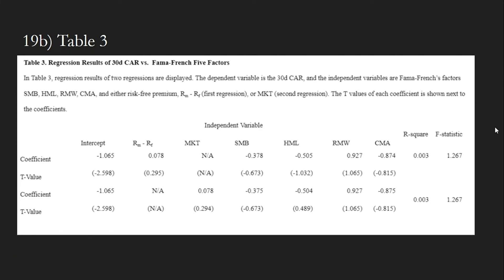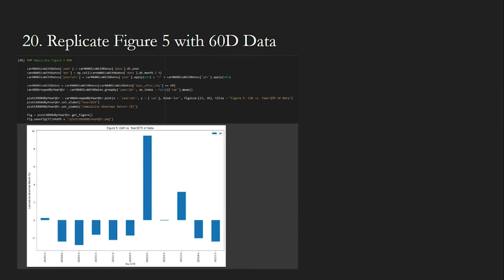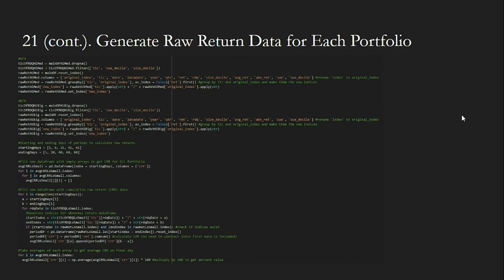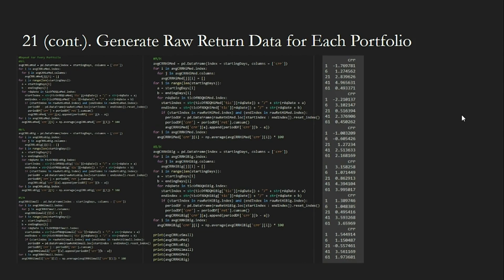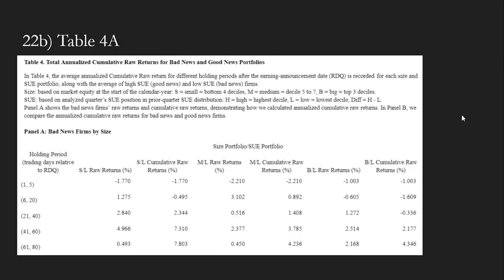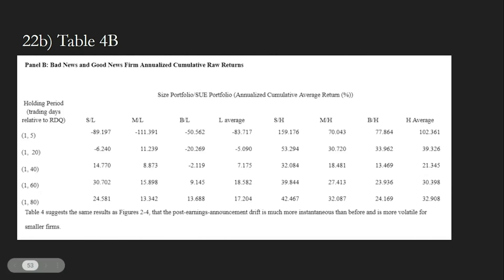We also plot the 60-day data with a bar graph based on their year and quarter, adding a new column combining the year and quarter. Next, we move on to replicating Table 2, which analyzes raw returns instead of abnormal returns. This block of code literally replaces our previous abnormal returns with raw returns, and we repeat the same process for every portfolio. Here is our cumulative raw return at the end of each 60-day period. Now we print out the information needed to complete Table 4. Table 4b shows us the most volatile returns occur in the first five days, and afterward the drift stops quickly after 20 to 40 days depending on the SUE portfolio of the firm.